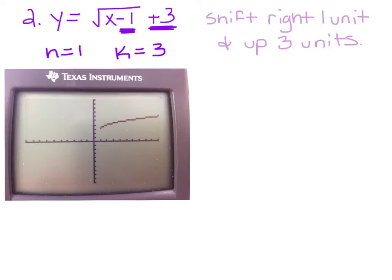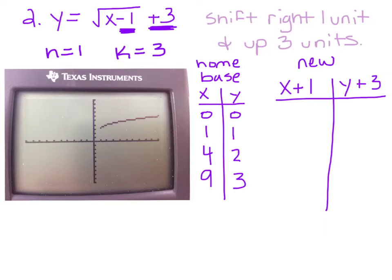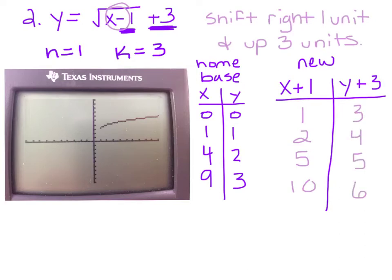Let's graph it in the calculator. It has shifted right 1 and up 3. Looking at the table, we add 1 to all the x's: 0+1=1, 1+1=2, 4+1=5, 9+1=10. And we add 3 to all the y's: 0+3=3, 1+3=4, 2+3=5, 3+3=6. So our new points are (1, 3), (2, 4), (5, 5), and (10, 6).